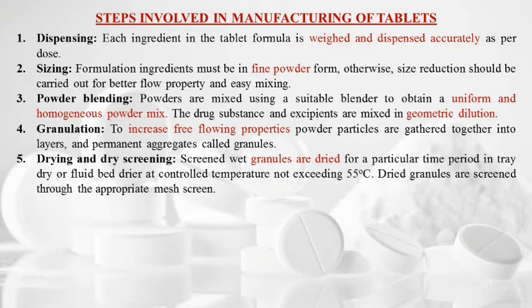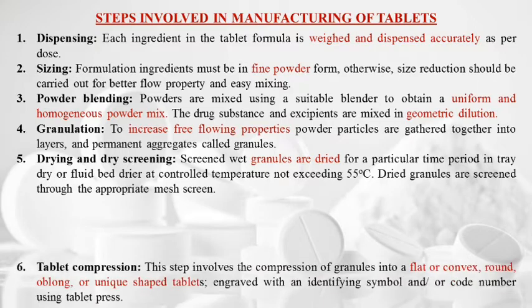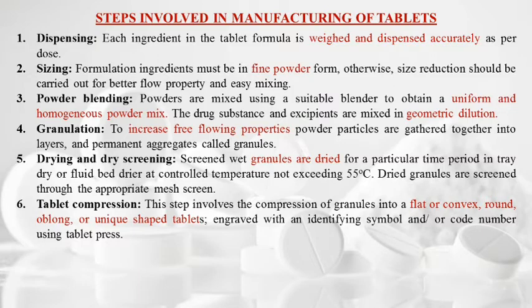Step five is drying and dry screening — screened wet granules are dried for a particular time period in a tray dryer or fluid bed dryer at a controlled temperature not exceeding 55°C. Dried granules are screened through an appropriate mesh screen. Step six is tablet compression — this involves compression of granules into flat or convex, round, oblong, or uniquely shaped tablets.